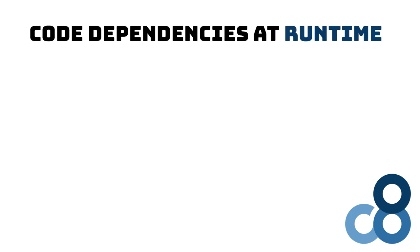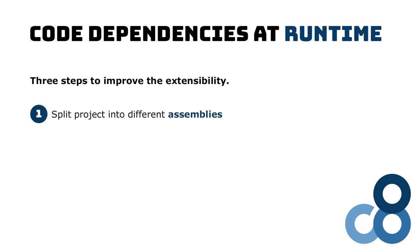Wouldn't it be great if we could define the dependencies at runtime instead of compile time? We want to refactor our sample application to improve its extensibility by defining code dependencies at runtime. It takes three simple steps to achieve our goal. Step 1: we extract our interface and its implementations to separate assemblies. This step allows us to deploy the different implementations as we need them after the project has been built. I will show you exactly how and why it works.